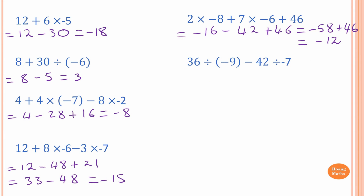Next one: 36 divided by negative 9 minus 42 divided by negative 7. Do division first. Positive 36 divided by negative 9 gives a negative — 36 divided by 9 is 4, so negative 4. Then negative 42 divided by negative 7 — two negatives give a positive — 42 divided by 7 is 6, so positive 6. The answer is negative 4 plus 6, which is the same as 6 minus 4, so the answer is 2.